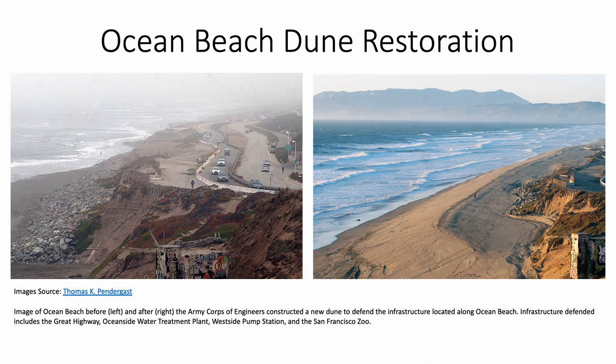This is Ocean Beach. Dune restoration is very common along the beach. The picture on the left is before, and the picture on the right is after the Army Corps of Engineers constructed a new dune to defend the infrastructure located along Ocean Beach — the Great Highway, the Oceanside Water Treatment Plant, the Westside Pump Station, and the San Francisco Zoo. Credit goes to Thomas Pendergast, who took the before and after pictures.